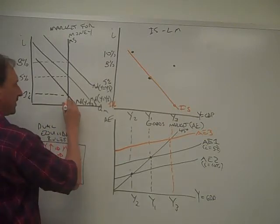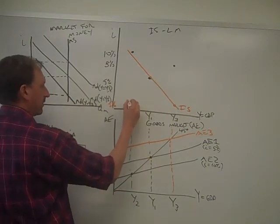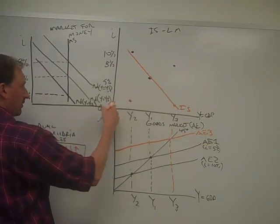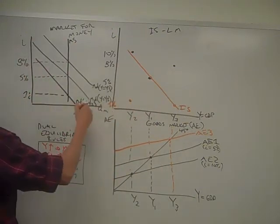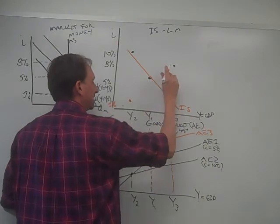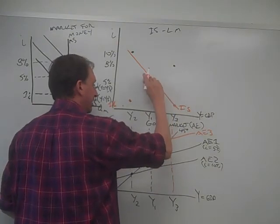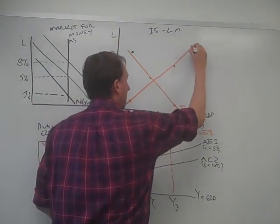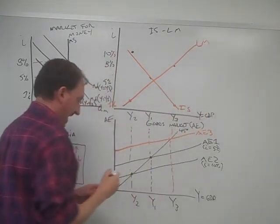And then from there, we would see at Y2, well, we'd have a 1% interest rate would satisfy this market. So then, I'm going to have to cheat just a little bit and move this point down. But we get an LM curve that looks like that.